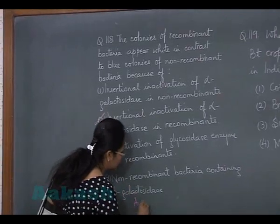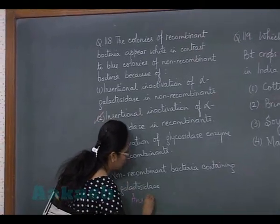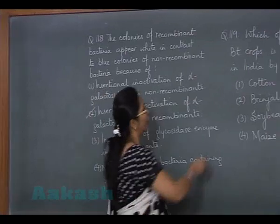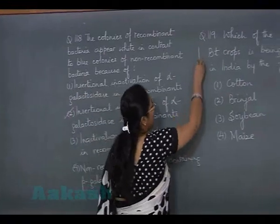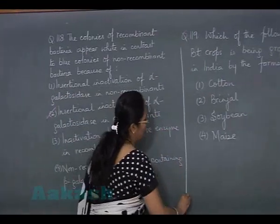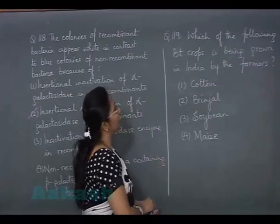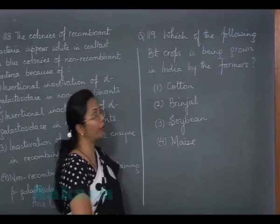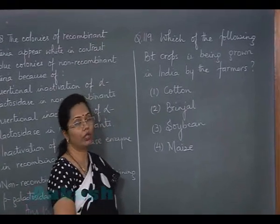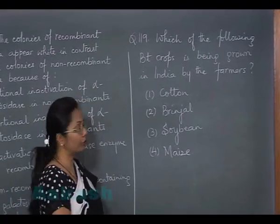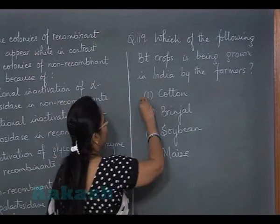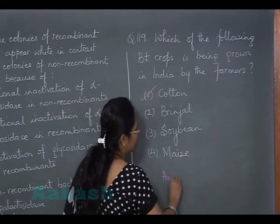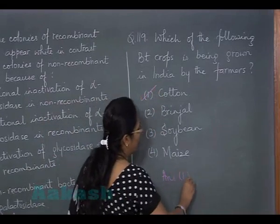So the answer for 118 is option 2. Moving on to question 119: which of the following Bt crops is being grown in India by farmers? This is a direct question and the answer is cotton, so the answer is option 1.